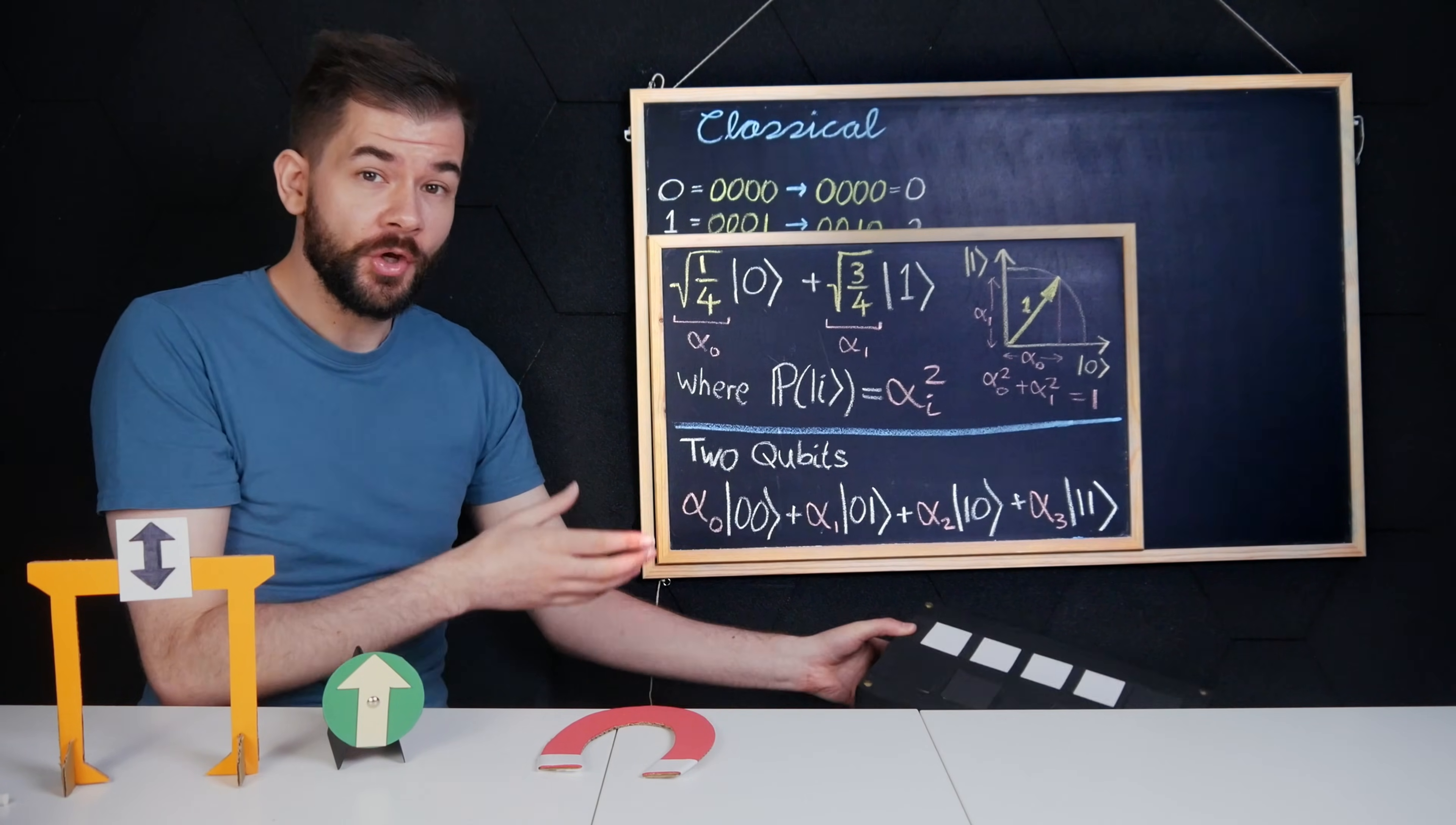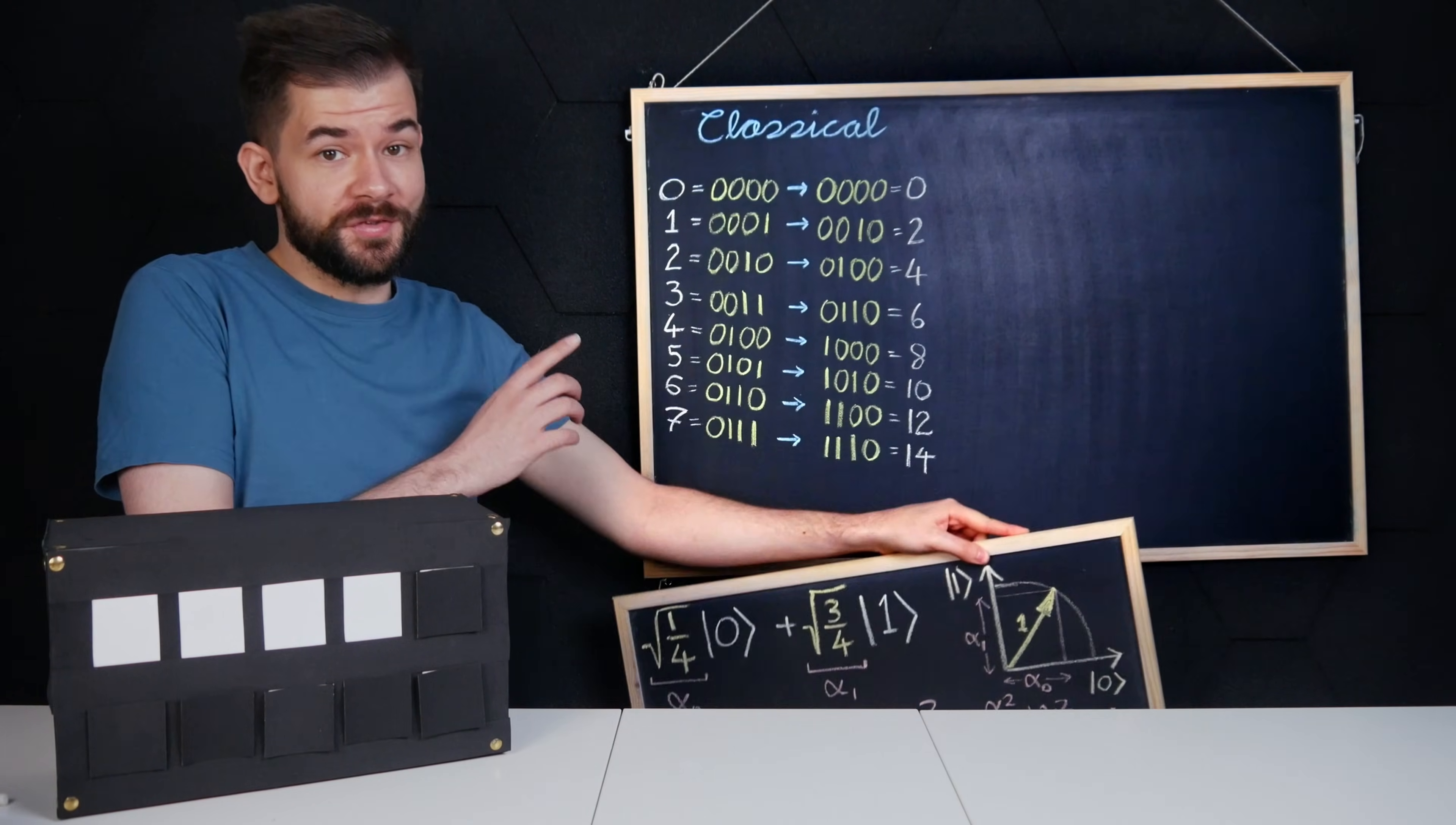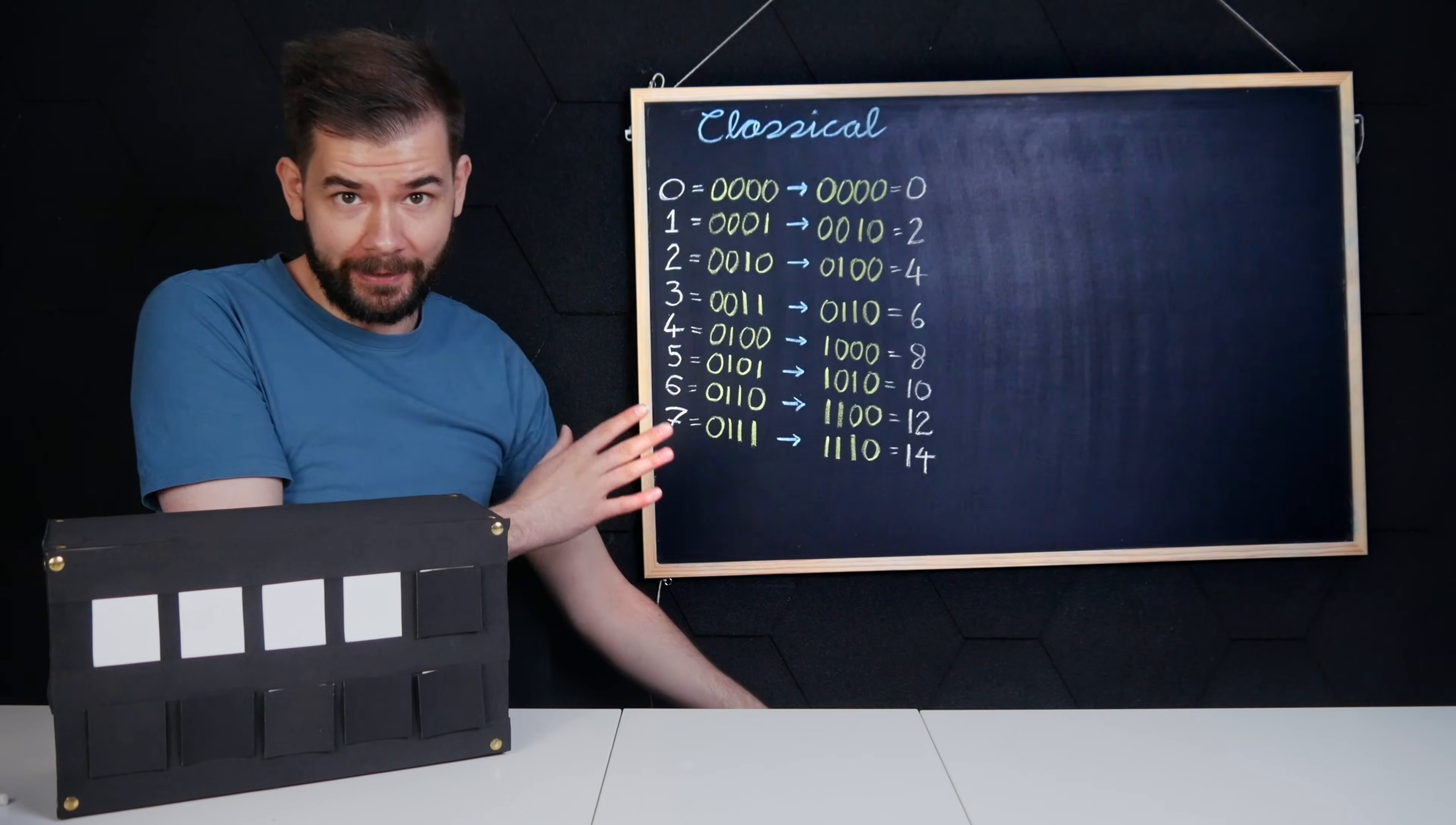So let's do some calculations with a four qubit quantum computer. Earlier, when doubling the integers from zero to seven, I had to do eight separate calculations.